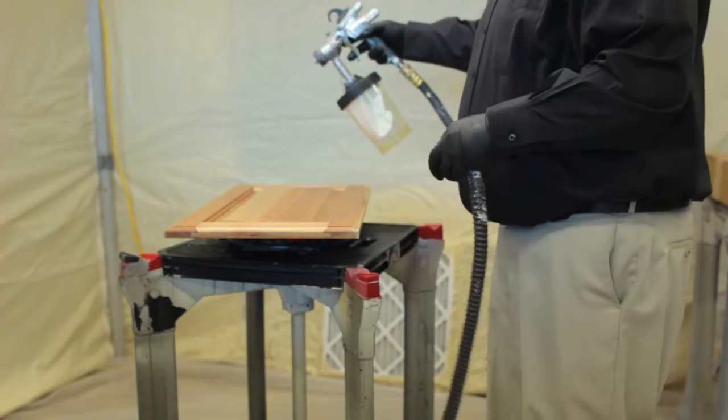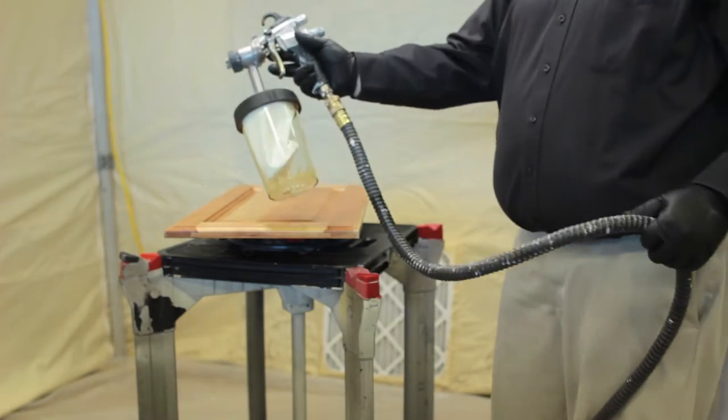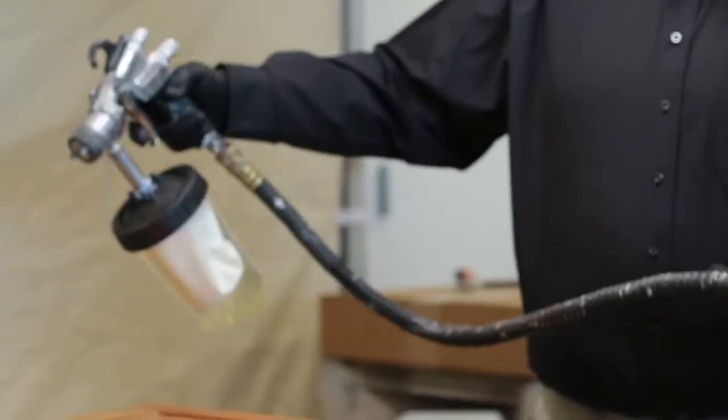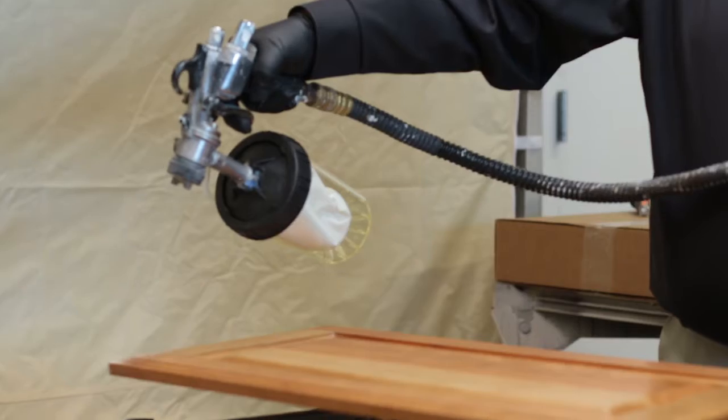So this is a typical gun we use with N-Hance. It'll spray all the suite of products that we have. A collapsible bladder at the bottom, just adjusted so we can apply a nice thick coat.